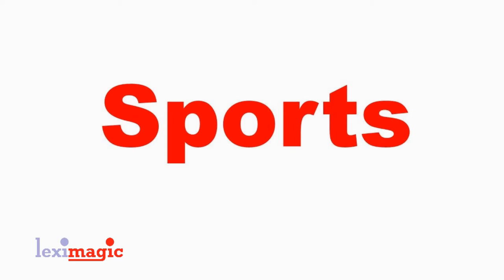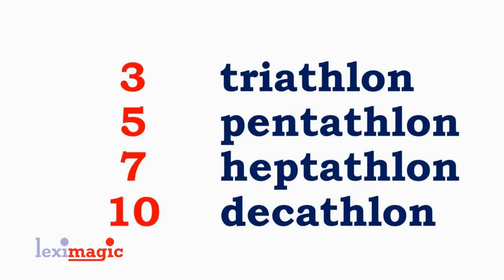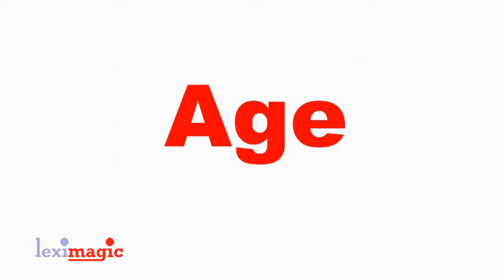Then in sports, we have words which describe groups of events where the athlete has to participate in many events. A triathlon is a group of three sports events. A pentathlon is a group of five events. A heptathlon is a group of seven events. And a decathlon is a group of ten events.